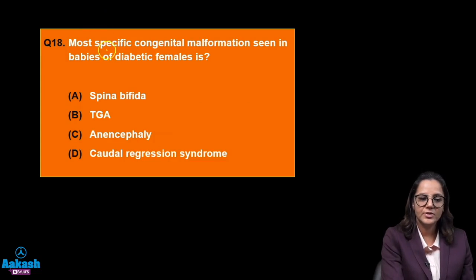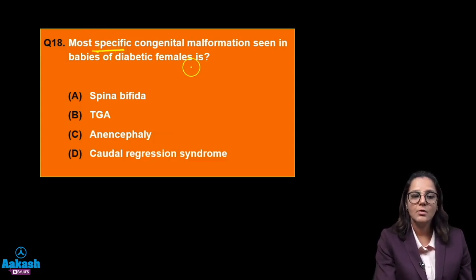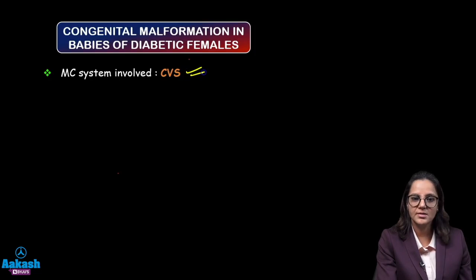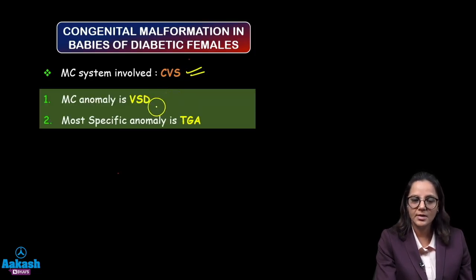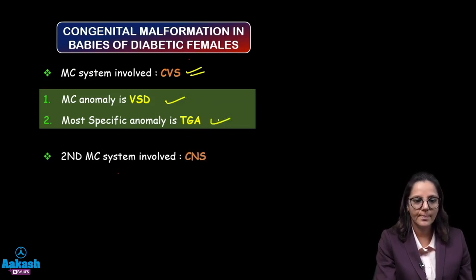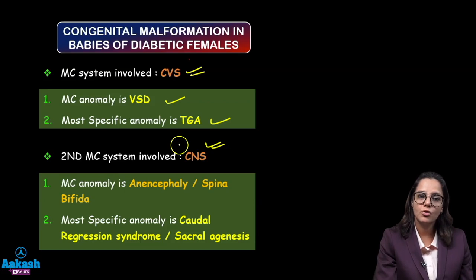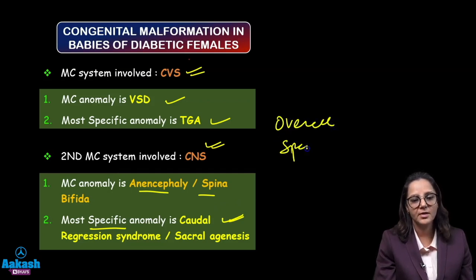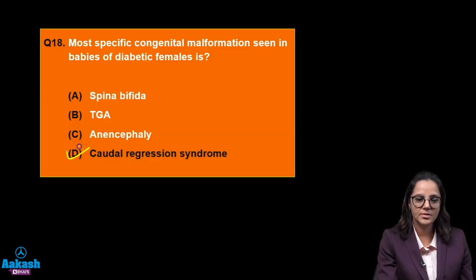What is the most specific congenital malformation seen in babies of diabetic females? The most common system involved is cardiovascular — most common anomaly is ventricular septal defect, most specific is TGA. The second most common system is the central nervous system — most common anomaly is anencephaly or spina bifida, most specific is caudal regression syndrome or sacral agenesis. Overall, the most specific is caudal regression syndrome.